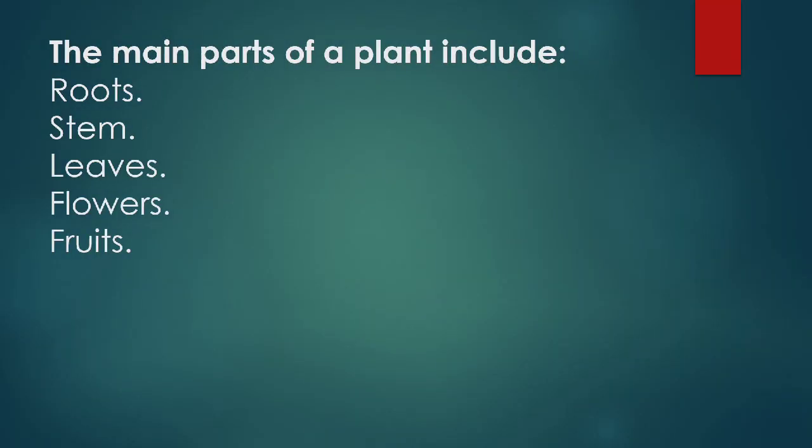The main parts of a plant include roots, stem, leaves, flowers, and fruits.